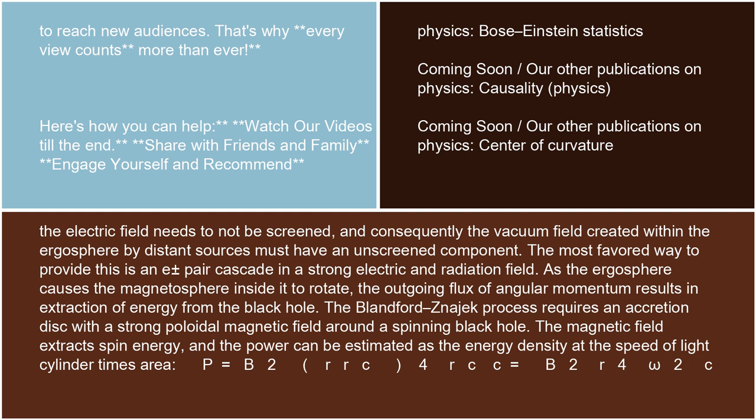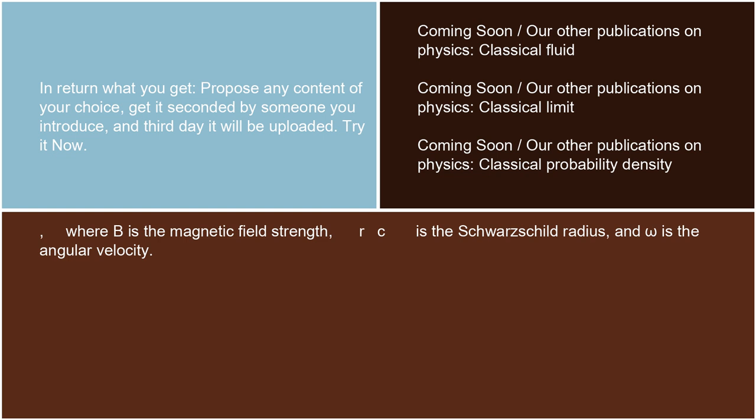The Blandford-Znajek process requires an accretion disk with a strong poloidal magnetic field around a spinning black hole. The magnetic field extracts spin energy, and the power can be estimated as the energy density at the speed of light cylinder times area: P equals B² r_c², for r_c equals B² r⁴ omega² / c. Where B is the magnetic field strength, r_c is the Schwarzschild radius, and omega is the angular velocity.